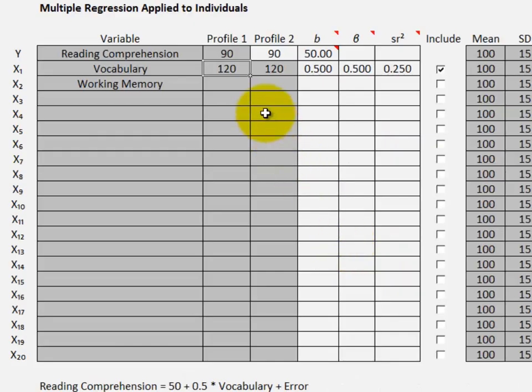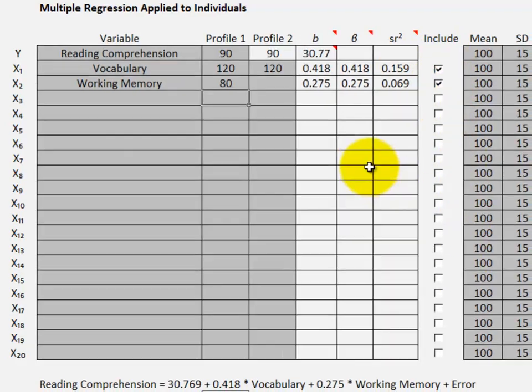In this case, all we know about the person is that they score 120 on vocabulary. But what if we have more information? Suppose that the person scores 80 on working memory capacity. If we enter in 80, nothing will happen because we haven't included it in the regression equation. We click here, and now it's included.